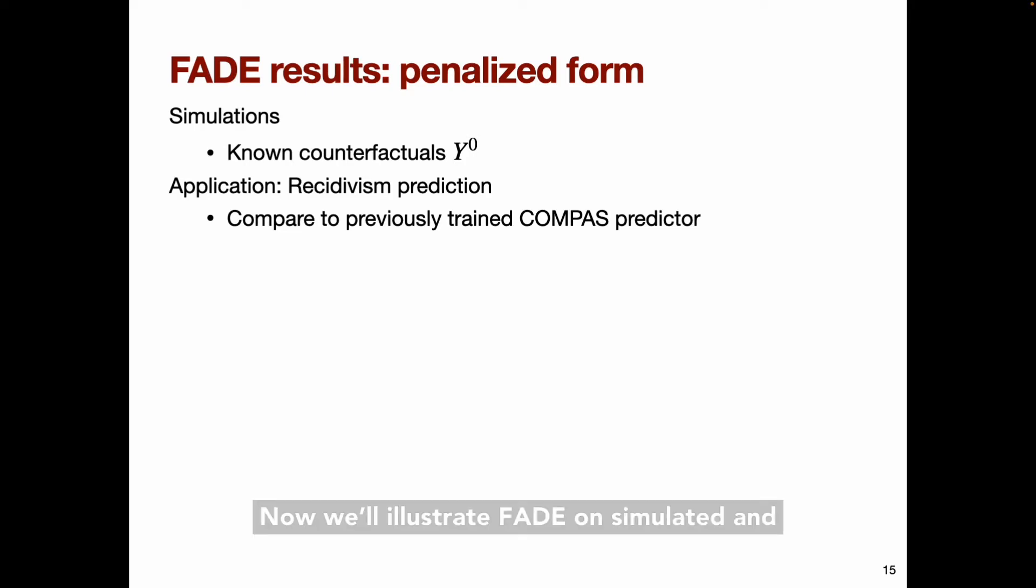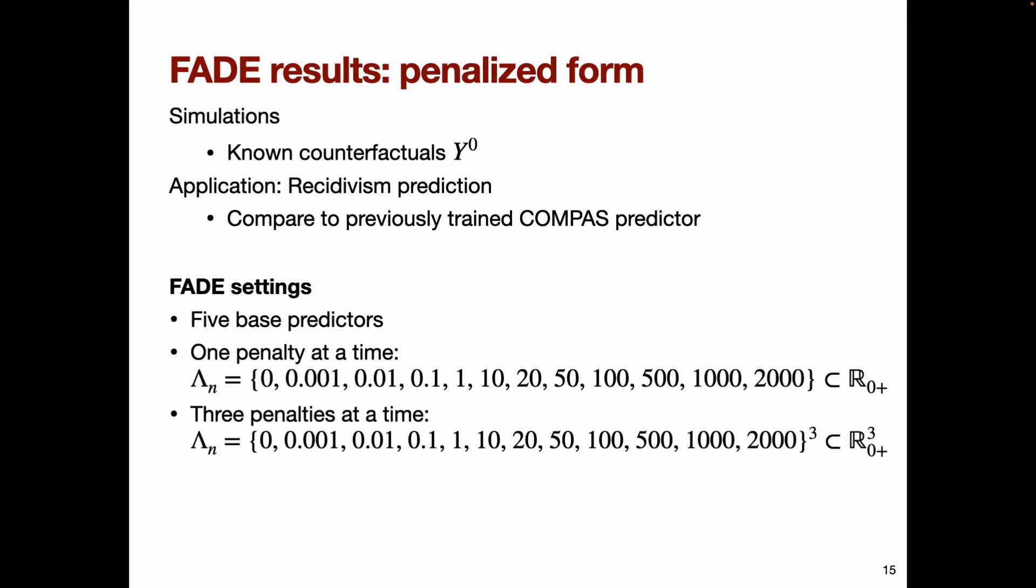Now we'll illustrate FADE on simulated and real data. For the application here, we'll look at recidivism prediction, comparing our method to the existing commercial recidivism predictor COMPAS. So for each dataset, we'll train five base predictors to then aggregate. We'll apply a single unfairness penalty at a time, and we'll also simultaneously apply penalties for all three of the unfairness measures introduced earlier. And we'll show a subset of results from each of these three datasets with additional results available in the paper.